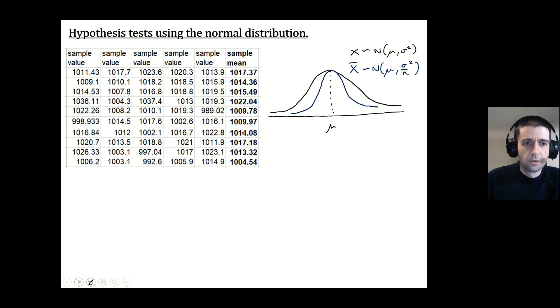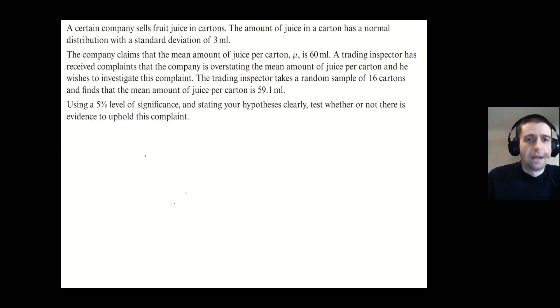So let's move on to an actual example then. And this example is taken from the Pearson Edexcel year two pure textbook. So we have a certain company sells fruit juice in cartons. The amount of juice in a carton has a normal distribution with a standard deviation of three. So I'm just going to go straight ahead and just jot that down straight away that the standard deviation is three.